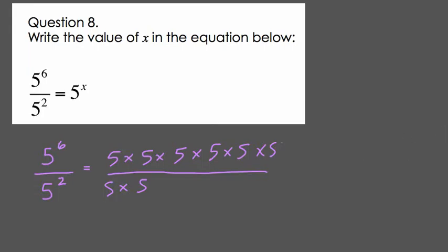We're dividing, so we can cancel here with this multiplication. 5 divided by 5 and 5 divided by 5 are both 1, and 1's not really relevant. It has no impact on our product, so we can ignore it. What's left are these four 5s. So all that remains is four 5s, or 5 to the 4th, and x must equal 4.